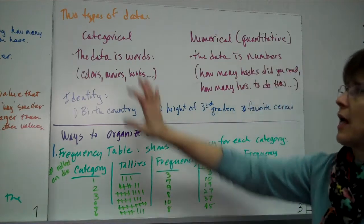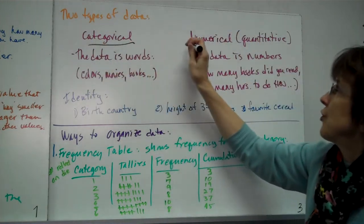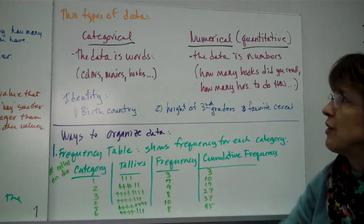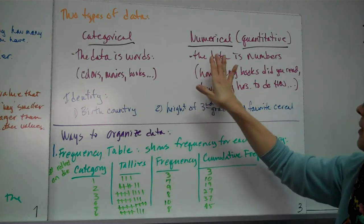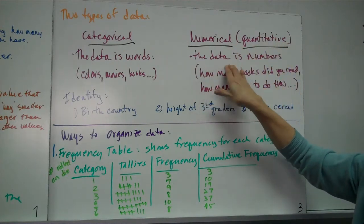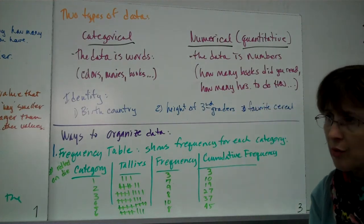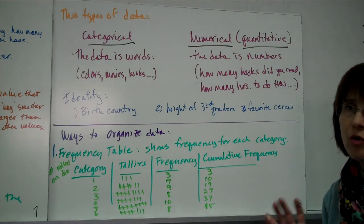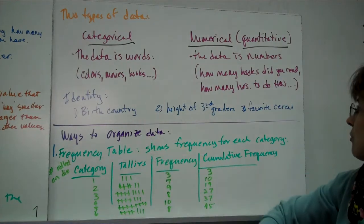There are two types of data, categorical and numerical. Remember, data is what you're collecting. Categorical is words. It's your favorite movie, your favorite color, your favorite book, your favorite class. Numerical data is quantitative. Okay, another big word, but it just means numbers, basically. And that's when the data is numbers. For example, how many books do you read? How many hours do you do your homework for? How far are you from home, or how many miles from school to home? Things like that, that answer with a number.